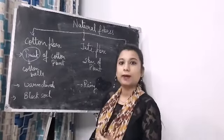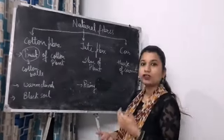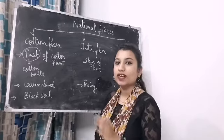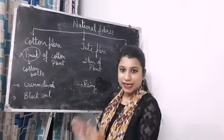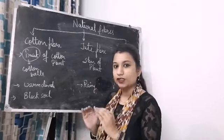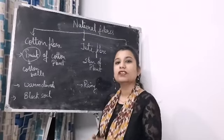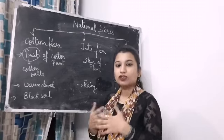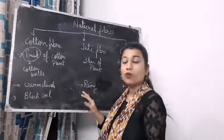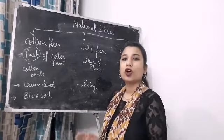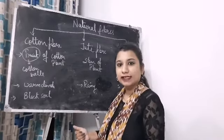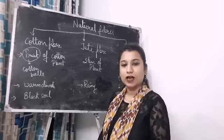Cotton fiber is obtained from the cotton balls of the plant and requires warm climate and black soil. Now let's talk about jute fiber. Jute fiber is obtained from the stem of the jute plant. It is harvested when the plant is at the flowering stage. The stem of the jute plant is then submerged in water for a few days, and then the fibers rot and are separated from the stem by hand or machines. It requires a rainy season to grow because it needs a lot of water. Jute fields are found in Assam and West Bengal in India.